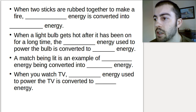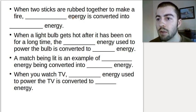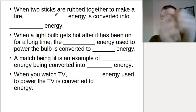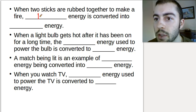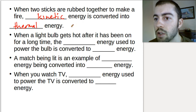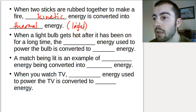When two sticks are rubbed together, the rubbing is kinetic energy — we're moving them together. And what are we getting out of it? We're making a fire. Out of that fire, we're getting thermal energy and also light. Any flame gives off both heat and light, so we have both thermal energy and light energy coming out.